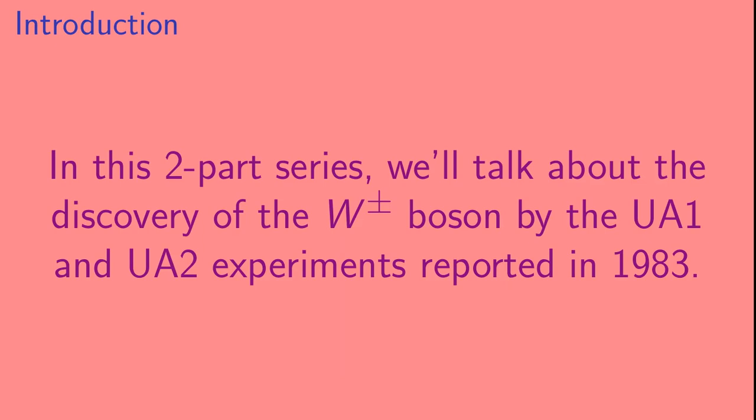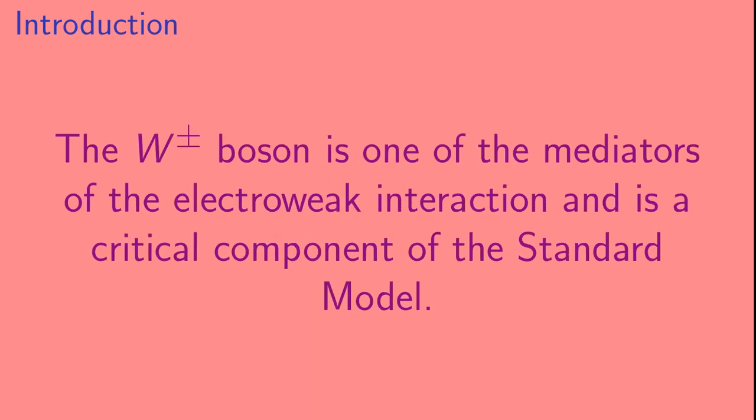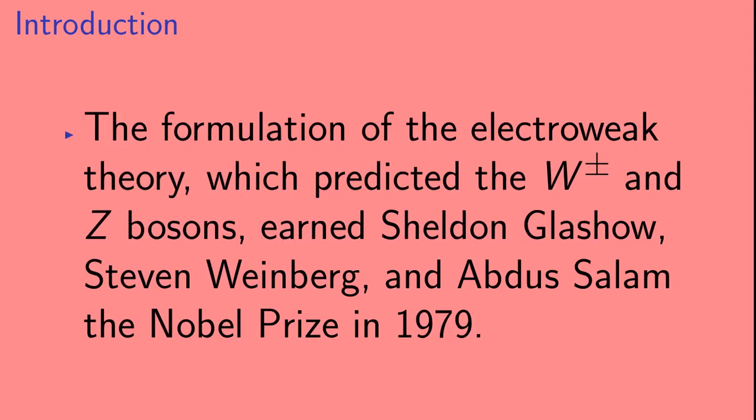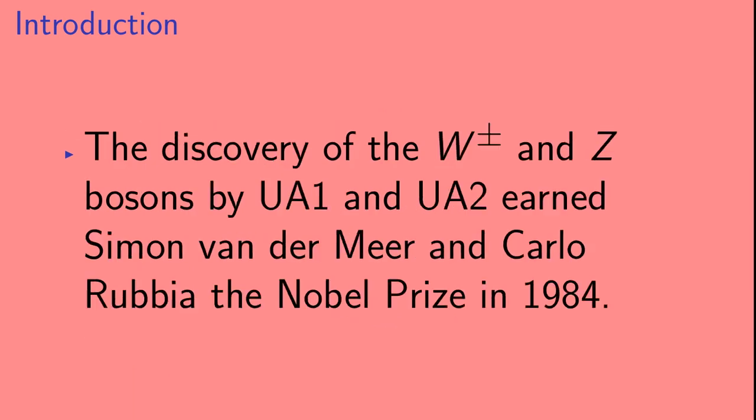In this two-part series, we'll talk about the discovery of the W boson by the UA1 and UA2 experiments reported in 1983. The W boson is one of the mediators of the electroweak interaction and is a critical component of the standard model. The formulation of the electroweak theory, which predicted the W and Z bosons, earned Glashow, Weinberg, and Salaam the Nobel Prize in 1979. The discovery of the W and Z bosons by UA1 and UA2 earned Simon Vandermeer and Carlo Rubia the Nobel Prize in 1984.